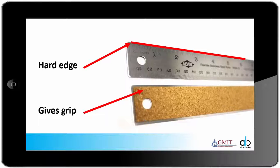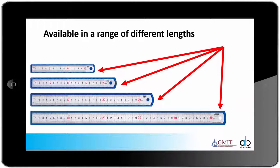This is a steel ruler. Sometimes you will get steel rulers with a cork backing on them. The cork backing gives grip and the steel ruler has a hard edge. It is a good tool for using as a straight edge when cutting straight lines using a scalpel. They are available in a range of different lengths from 15 centimeters long up to 50 centimeters long or even in meter lengths.